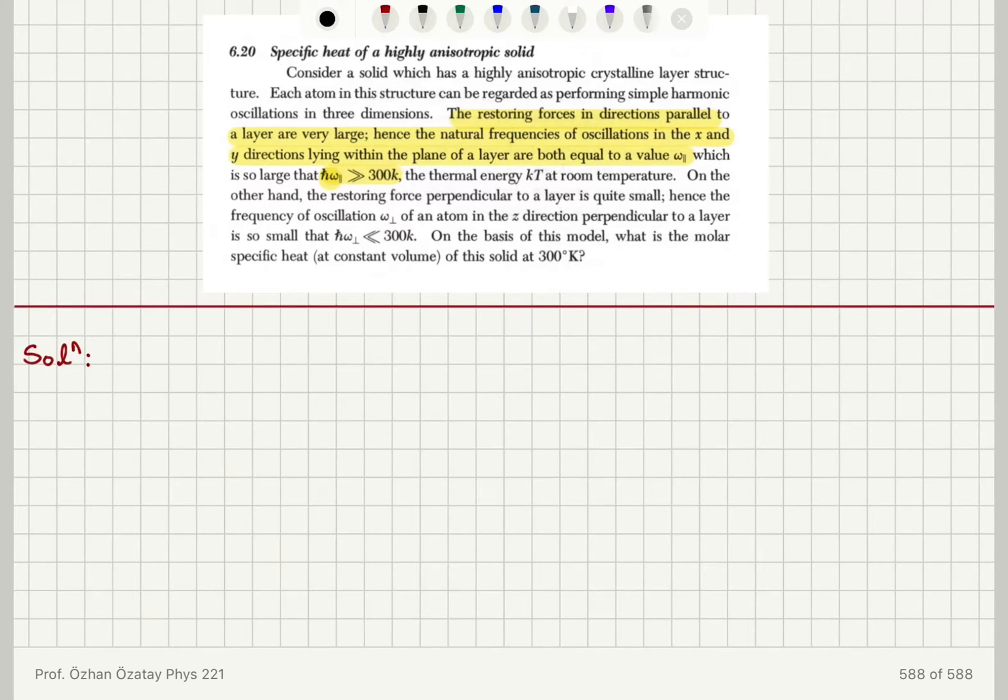On the other hand, the restoring force perpendicular to a layer is quite small. Hence, the frequency of oscillations omega perpendicular of an atom in the z direction perpendicular to a layer is so small that h-bar omega perpendicular is much less than 300K. On the basis of this model, what is the molar specific heat at constant volume of this solid at 300 kelvin?